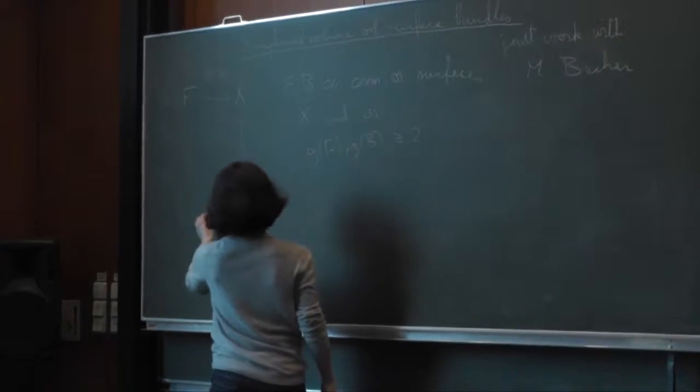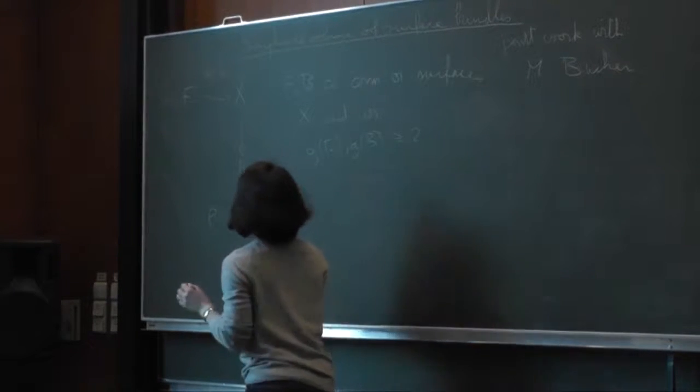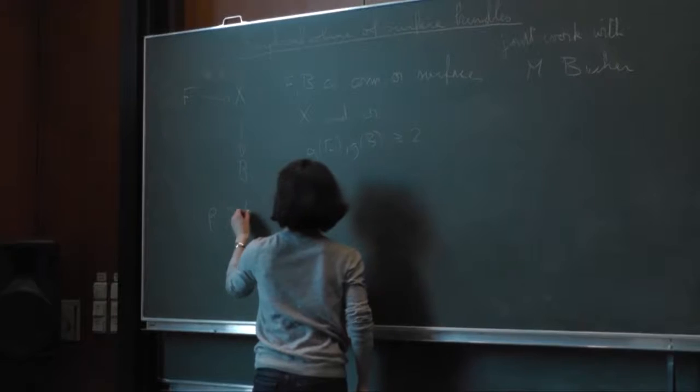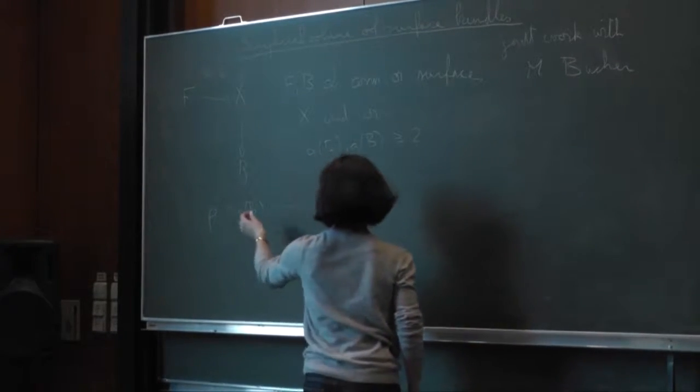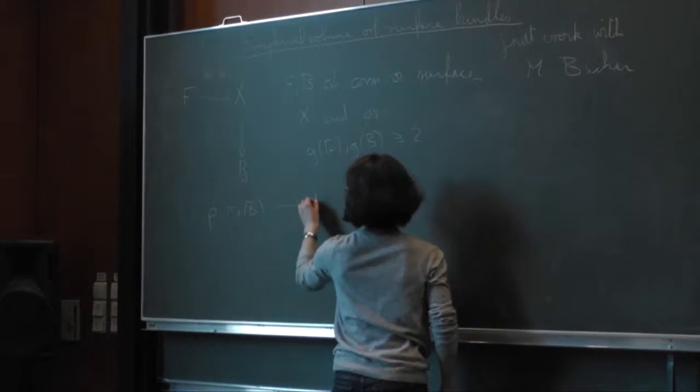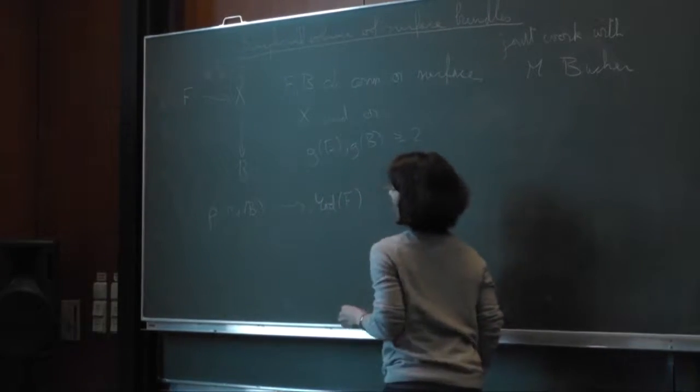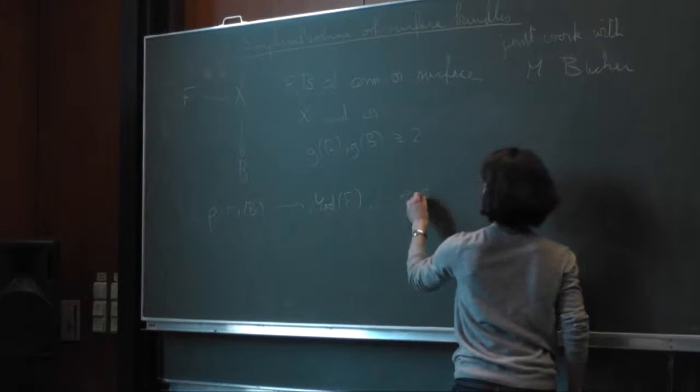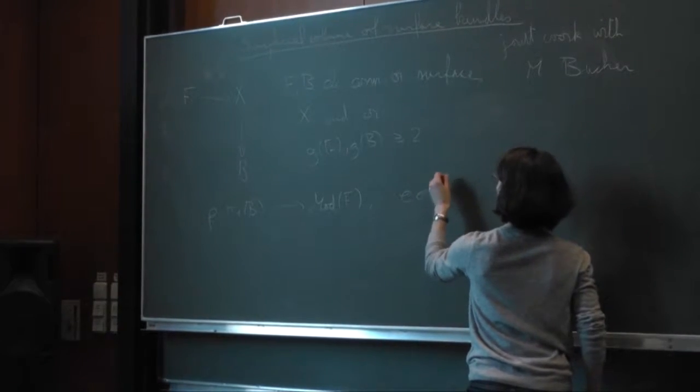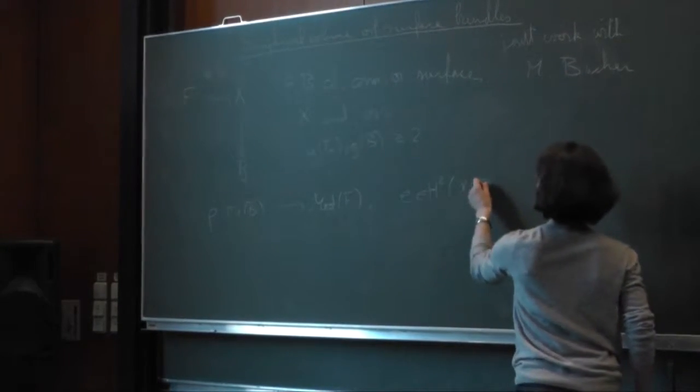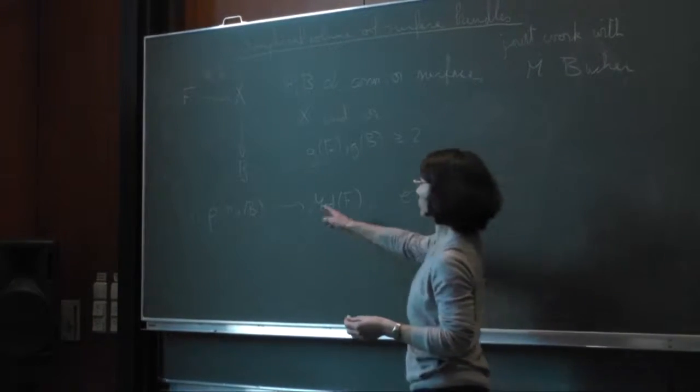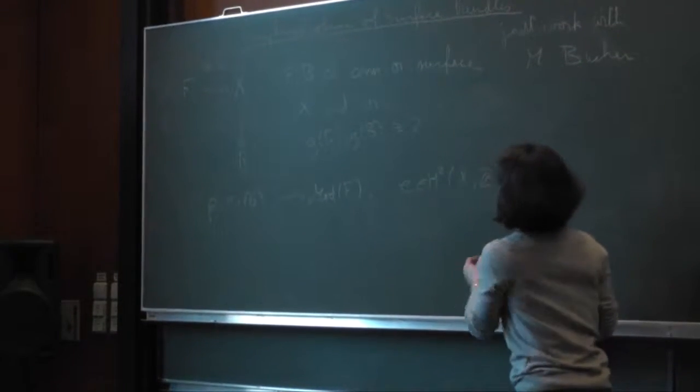So as we heard, these bundles are determined to isomorphism by their monodromy representation, that I denote by rho, in the mapping class group on the fiber. And what we will also use is the Euler class in the second cohomology of X, which is the Euler class of the vertical tangent bundle of X.